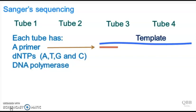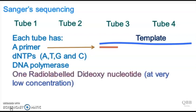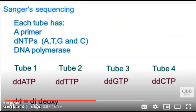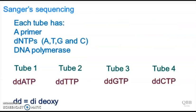The interesting part is that the reaction mixture also has one radiolabeled dideoxynucleotide at low concentration. Tube one will have ddATP, tube two will have ddTTP, tube three ddGTP, and tube four ddCTP, at very low concentration, and all will be radiolabeled.